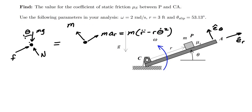And in the a sub theta direction, I'll have m a sub theta is equal to m times quantity 2 r dot theta dot plus r times theta double dot.